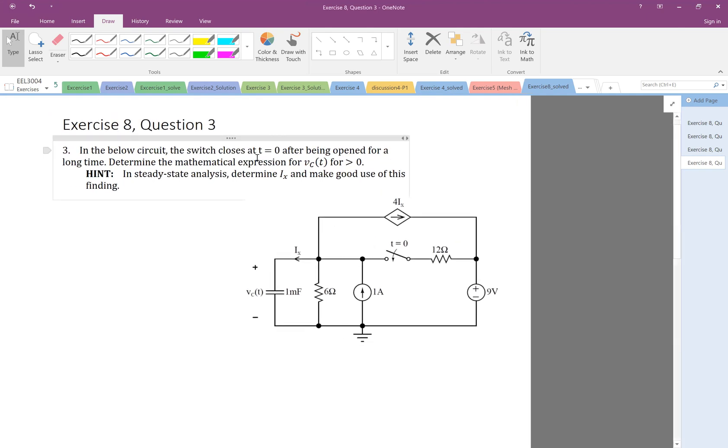So it says the switch closes at t equal to zero. Therefore, before t equal to zero, for a long time, at t negative, the switch was open. And let's see what happens. At exactly t zero negative, the switch is open, but also always look at the capacitor inductor and the steady state. Here we have a capacitor, and in steady state, the capacitor will be open circuit. So if the capacitor is open circuit, and this is open, what happens to I of x?